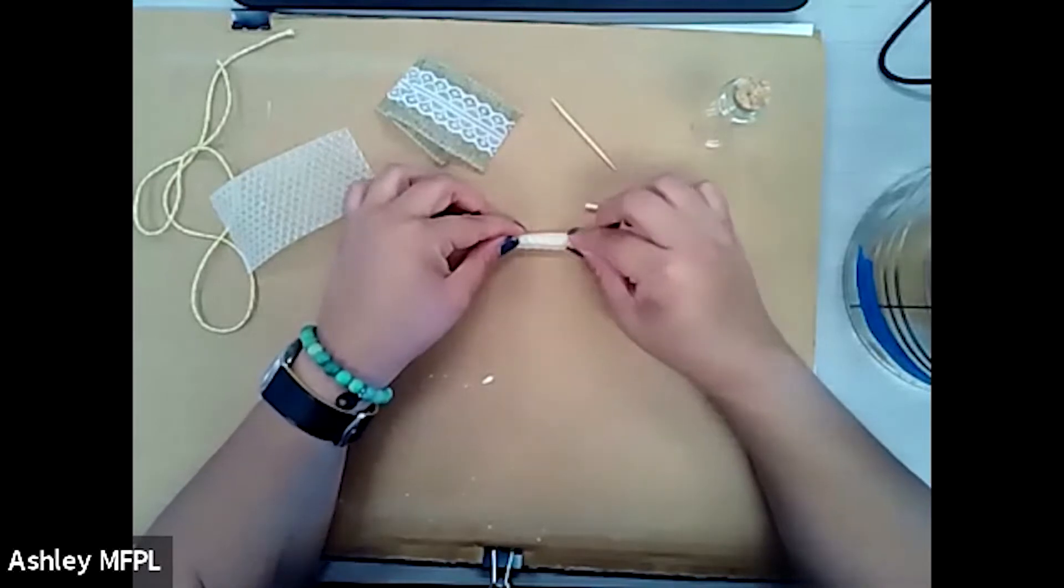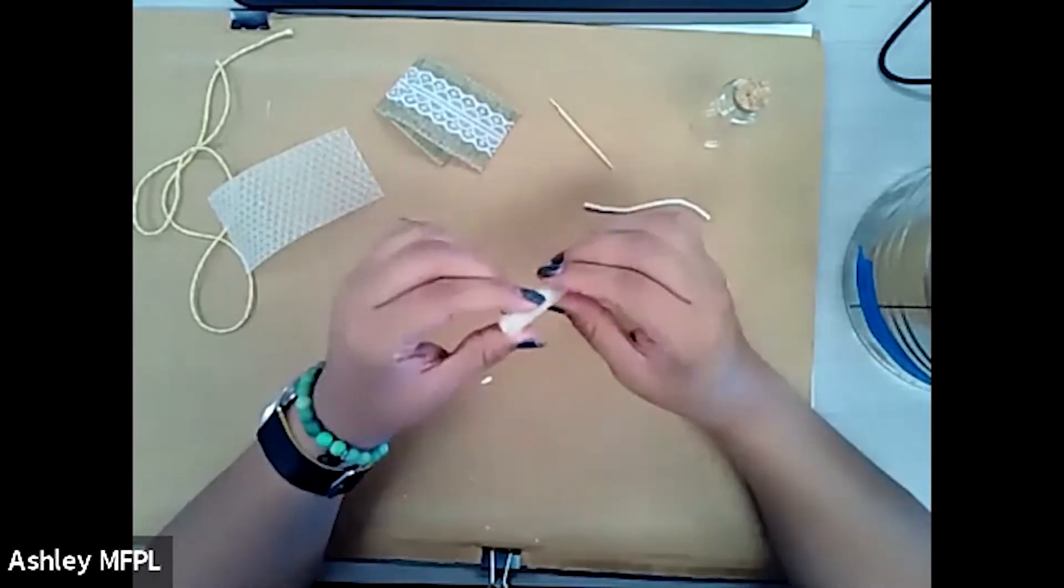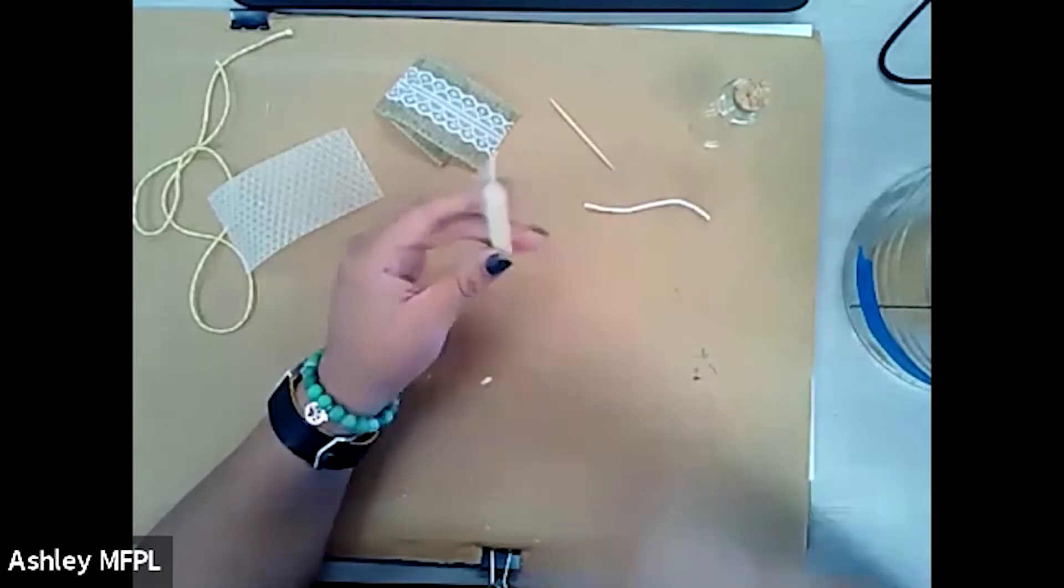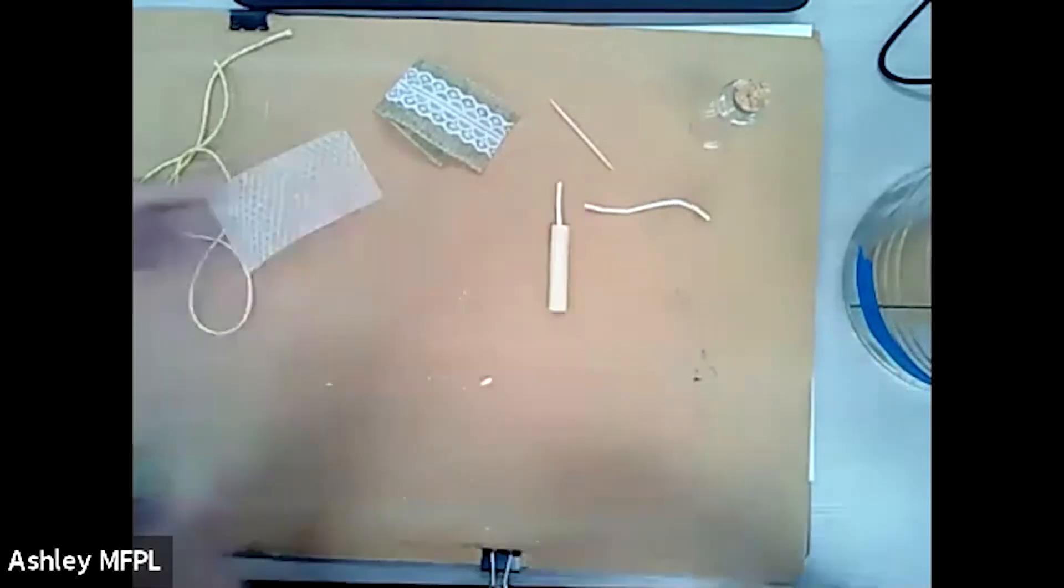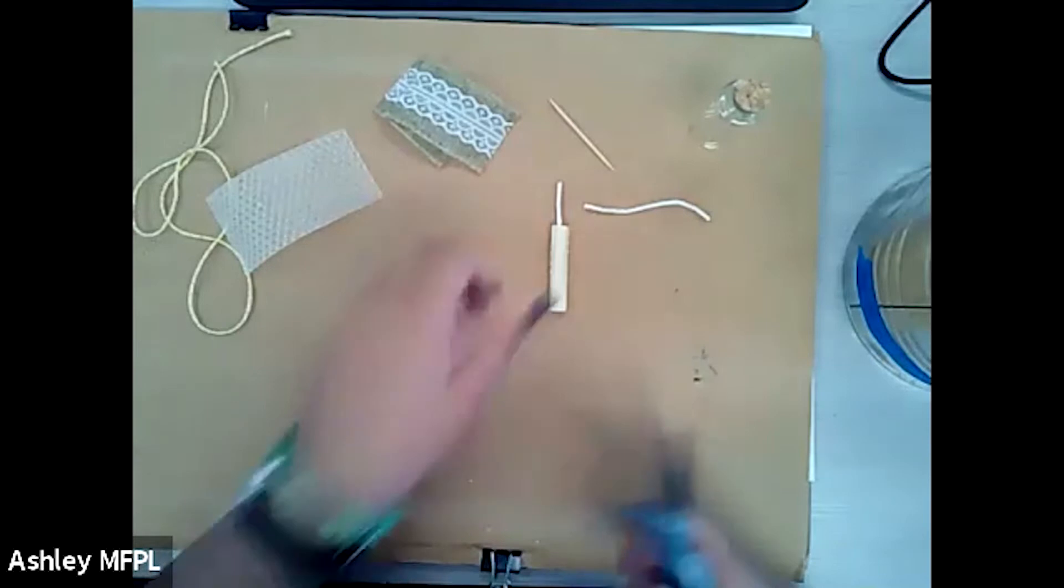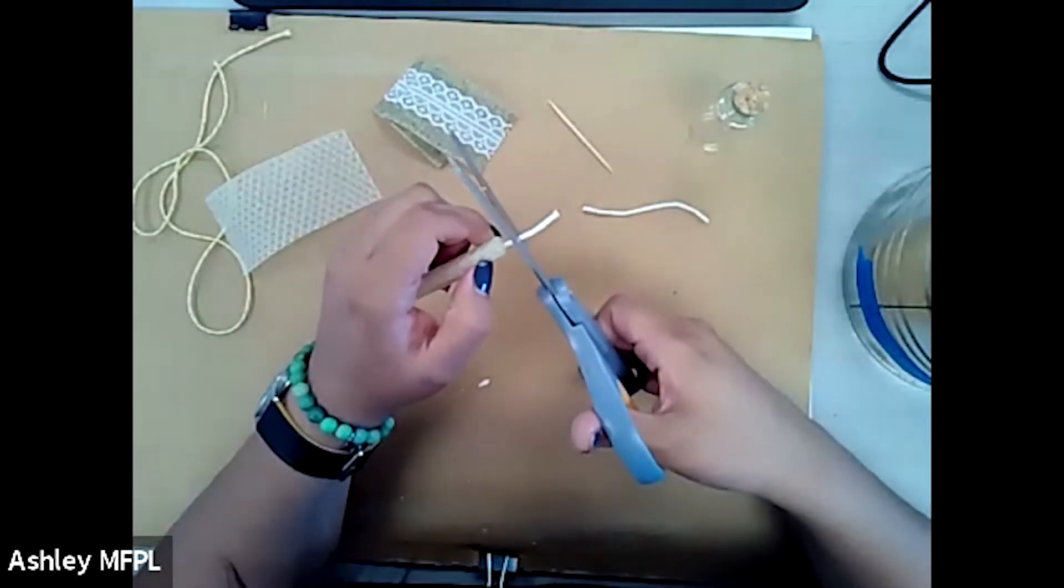Amazon has a lot of kits that you can use too and a lot of different colors. But most craft stores will carry them. I'm just going to cut the wick a bit to make it smaller.